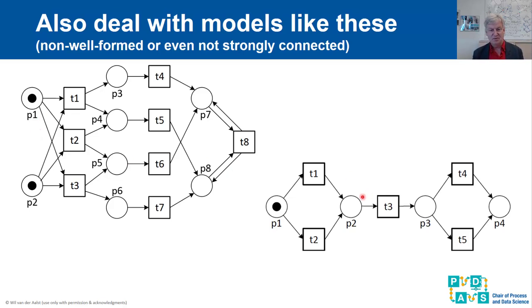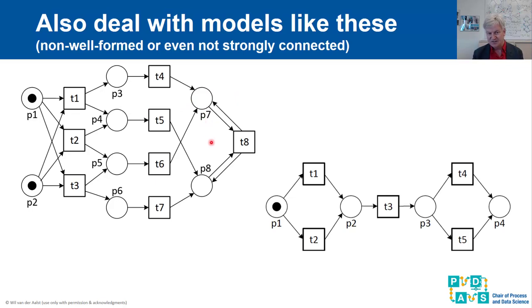Here is a simpler example — completely trivial, it is free choice but not well-formed. We always end up in a deadlock: if there is a token in P4, there is nothing else we can do. In the other example, we will always end up in the marking with tokens in P7 and P8, and then T1 through T7 are all dead — they can never happen again.